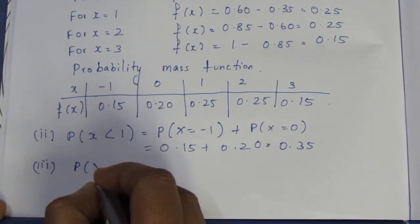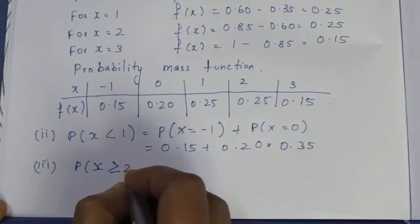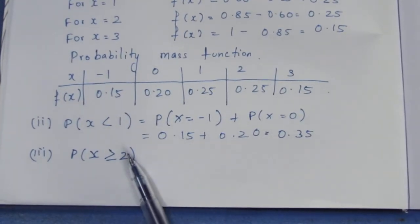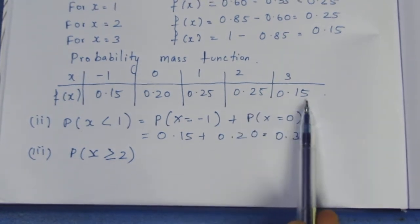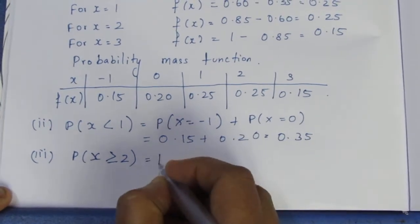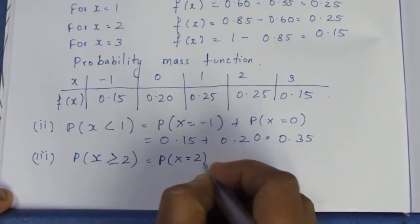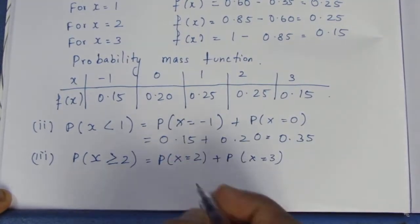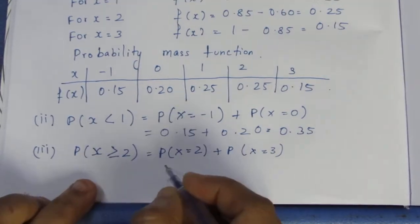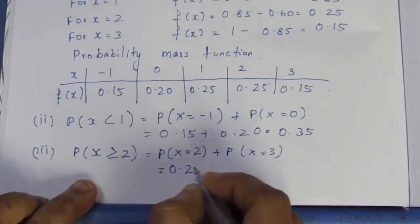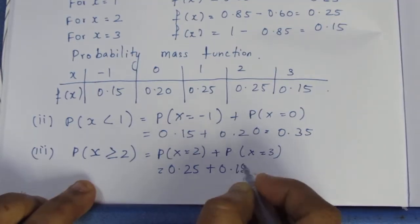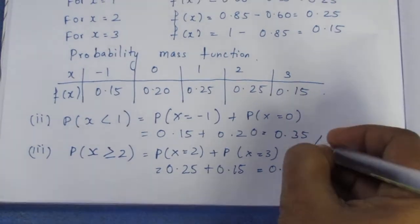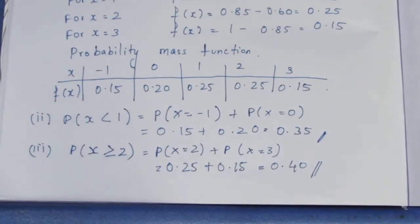Next, for the second subdivision — p of x greater than or equal to 2 — we look at the end values: p(x = 2) plus p(x = 3) = 0.25 plus 0.15 = 0.40. This is the answer for the third subdivision as well.